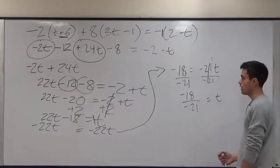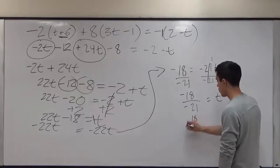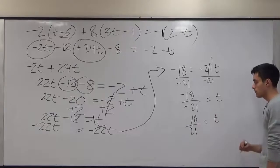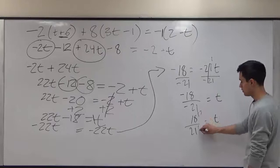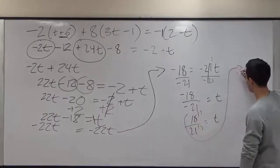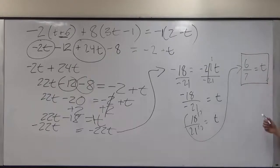However, this then becomes a positive because a negative and a negative is a positive. So it would be 18 over 21 is equal to t. But we can still simplify this because 3 goes into both numbers. So if we divide it by 3, our final answer can be 6 over 7 is equal to t. And it can no longer be further simplified.